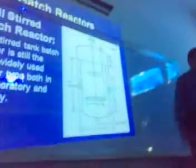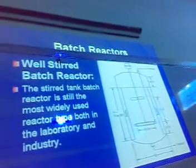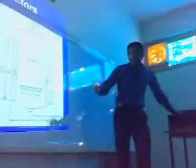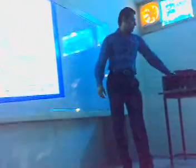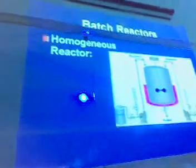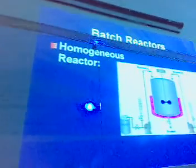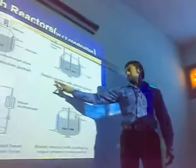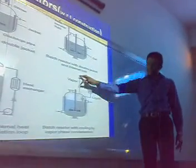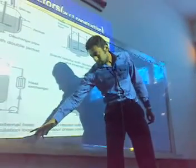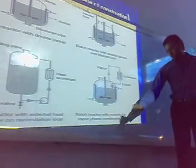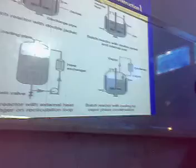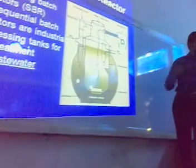I will tell you about all of these. First you can see it is widely used in industries. The next one is a typical straight back jacket and homogeneous jacket. Next are some jackets with respect to the description: bare jacket with double jacket and internal coil, bare jacket with external heat exchanger on the circulation group, and bare jacket with cooling by vapor phase condensation. Otherwise you can see bare jacket, which I will explain.